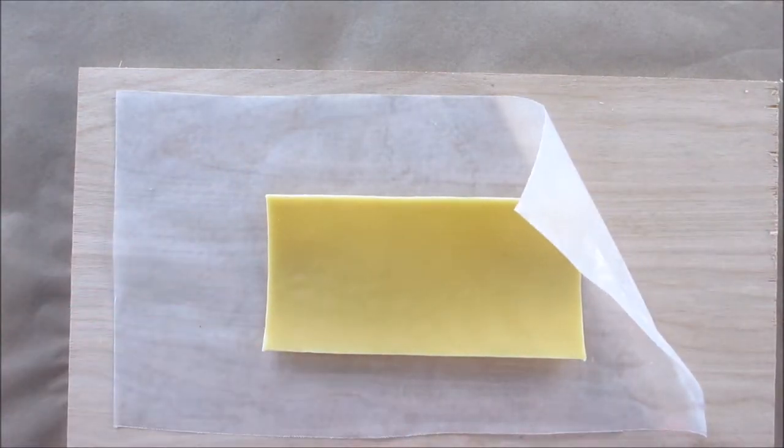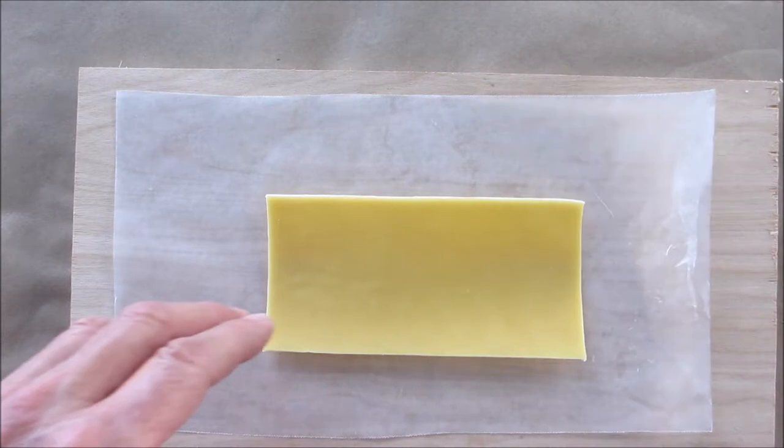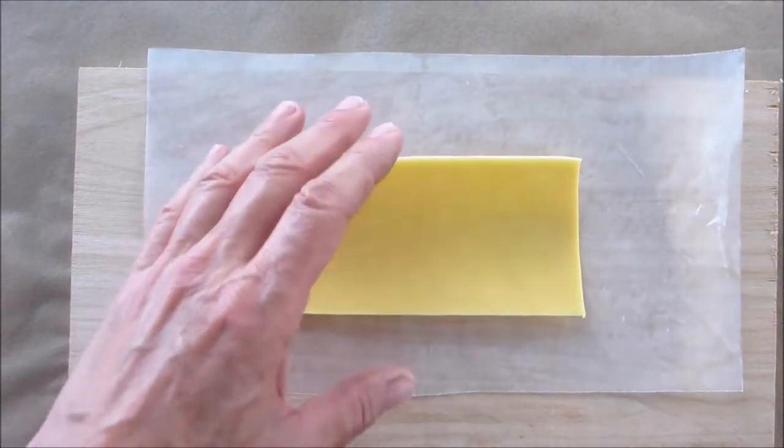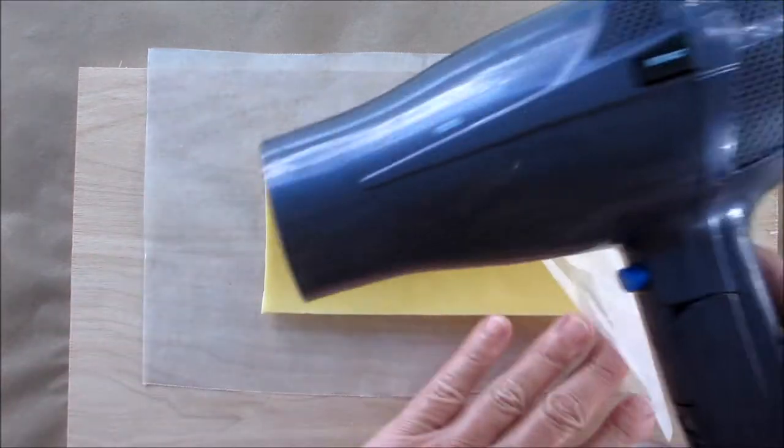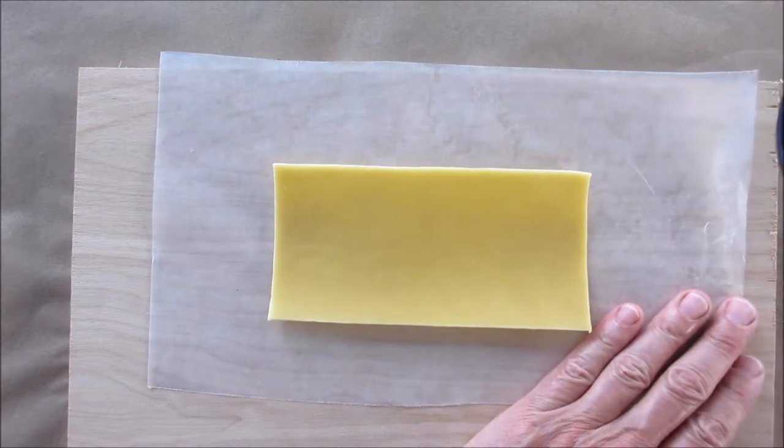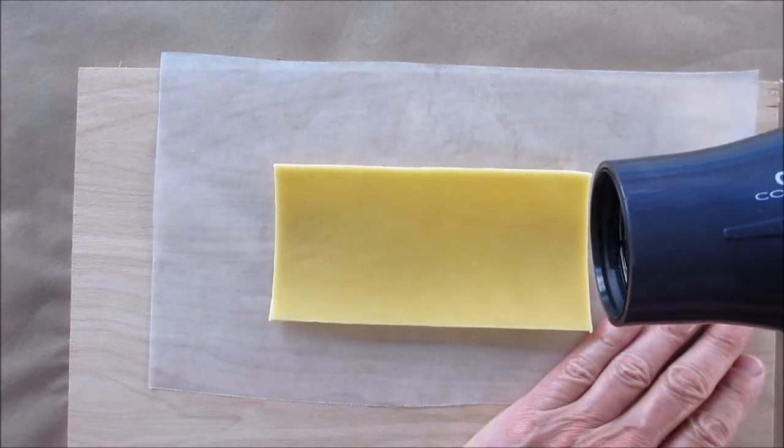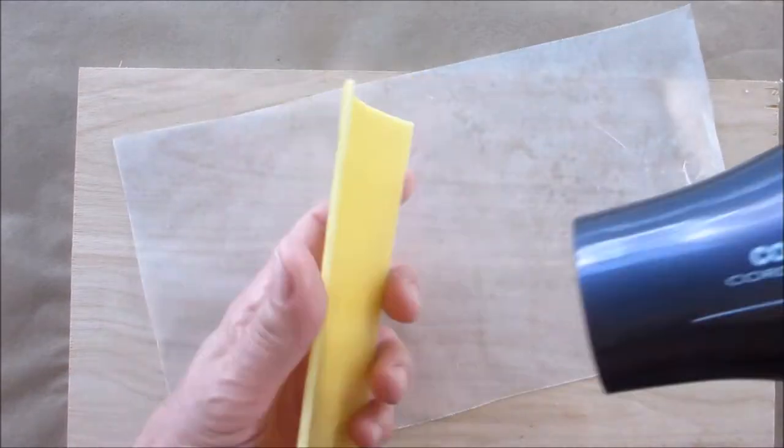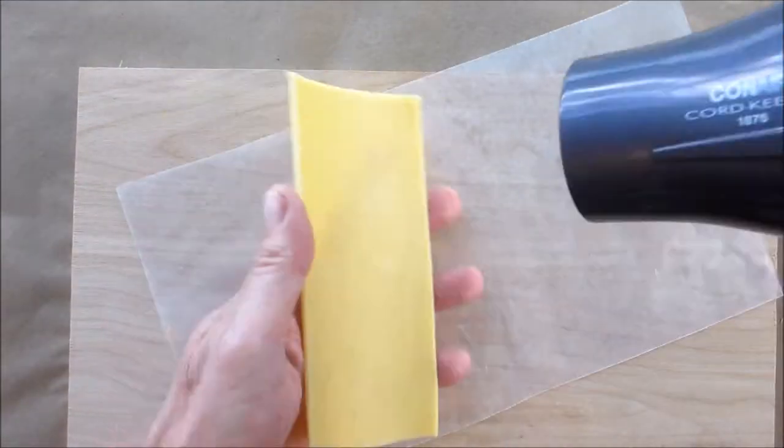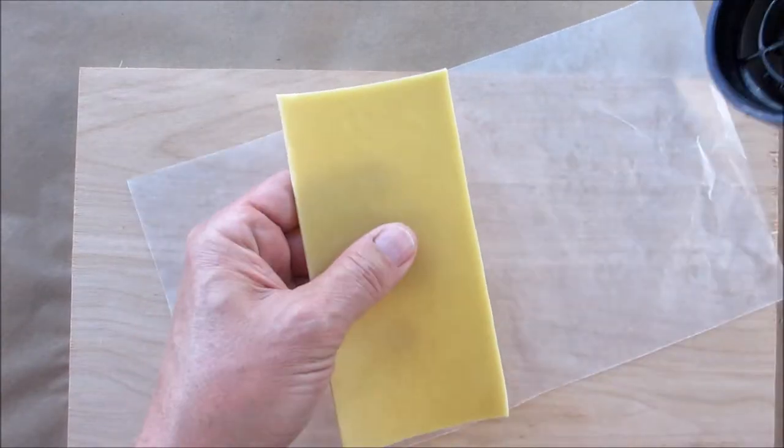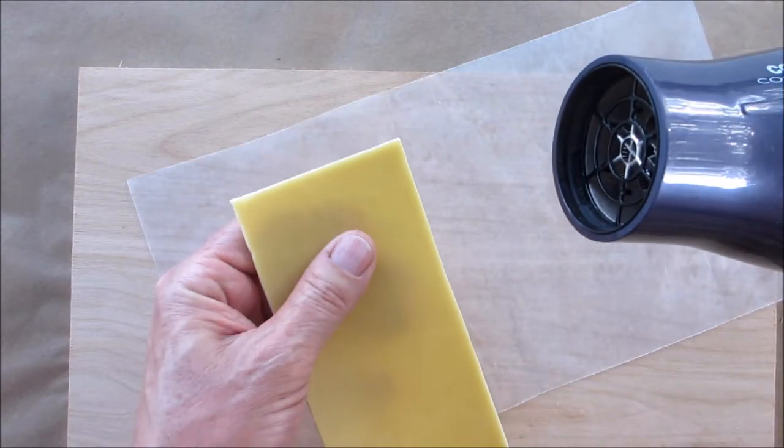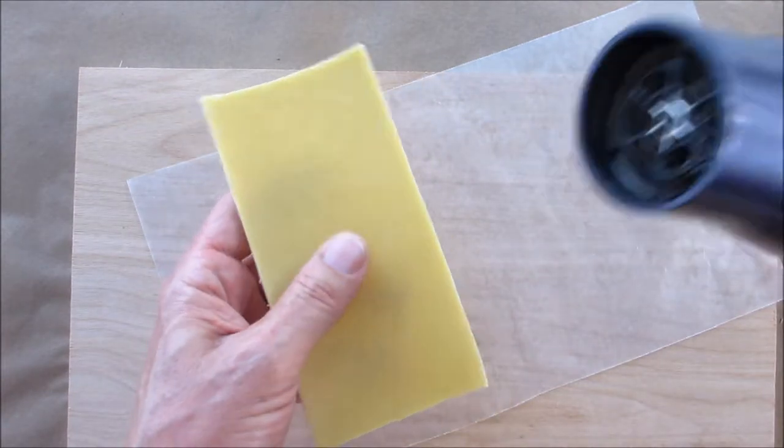Now you're going to want to gently heat this up, because you're not going to be able to roll it when it's like this because it's too hard. So I have a standard hairdryer. You'll put it on low. Be careful because you don't want to melt it, you just want to make it pliable. What I'm doing with my fingers is I'm just feeling it to see when it gets pliable. If it's not pliable, you're going to crack it all up.